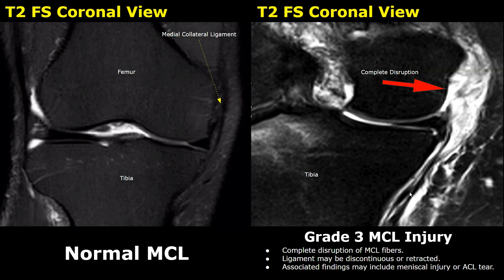In this case, a complete rupture is present in the MCL at its tibial attachment. The ligament has retracted due to this rupture and appears folded. The normal MCL appears as a dark fibrous band with no disruption or fluid surrounding it, whereas this MCL is surrounded by bright hyperintense fluid. Such features indicate a grade 3 MCL injury.